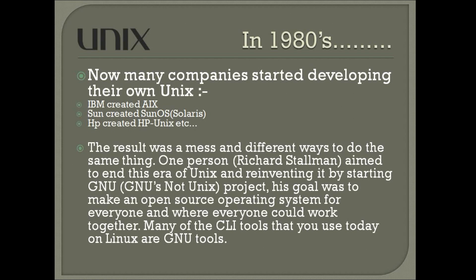The result of this was a fragmented mess with many competing versions. Then Richard Stallman saw that this open era could be lost. So he reinvented it by starting the GNU project — GNU's Not Unix — whose goal was to create an open source operating system for everyone, where all people can work together, including all the CLI tools you use in the command line, which became known as GNU tools.